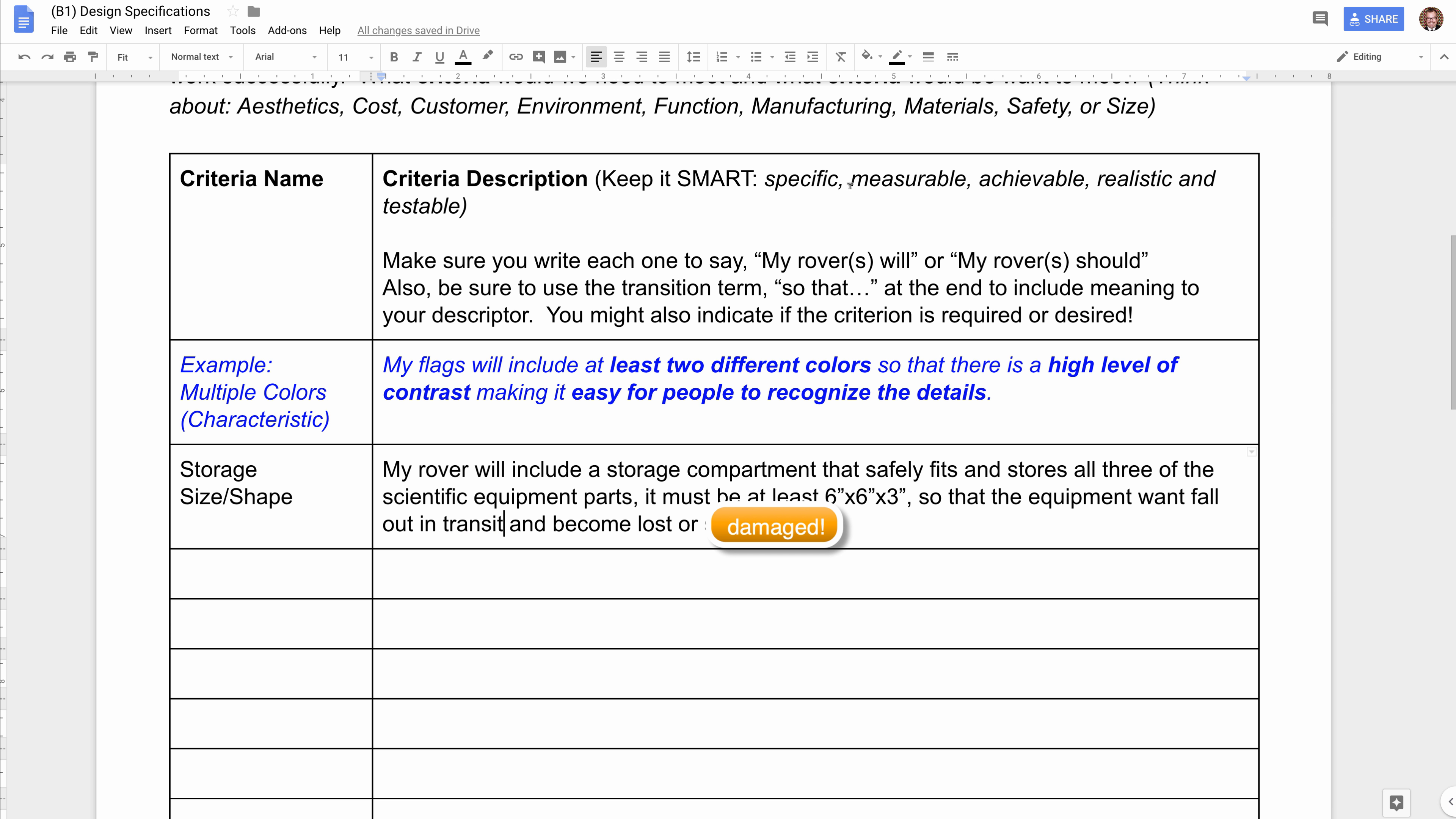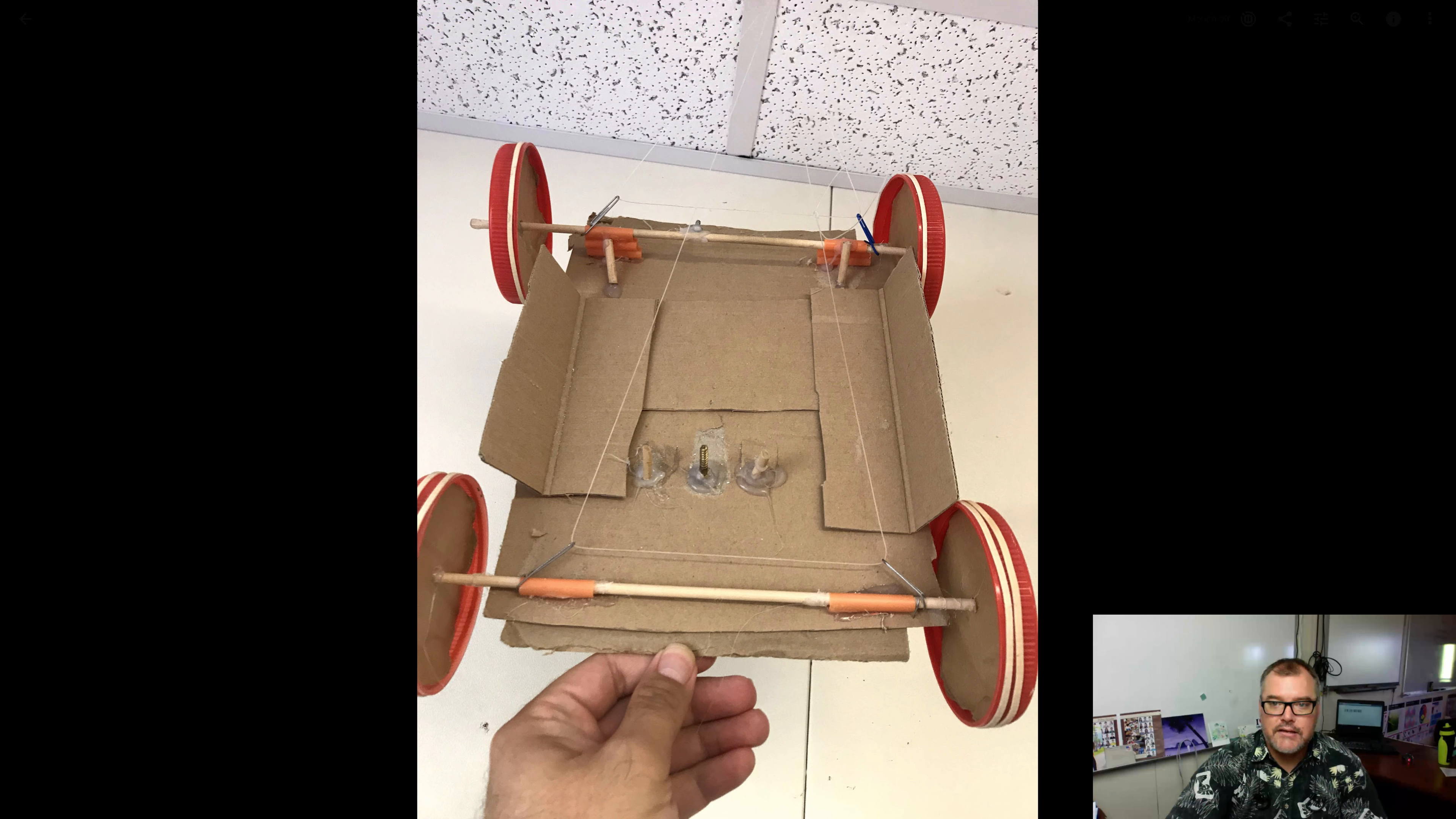So that is a very specific, very measurable, very achievable, realistic and testable criteria. It's specific because it's talking about exactly what it needs to be able to do. It's measurable because it's got sizes and shapes in there. It's achievable and realistic because this is something I can actually build on. And it's totally testable because once I have my rover running, I could test to see whether or not it's that size, I could test to see whether or not things fall out of it.